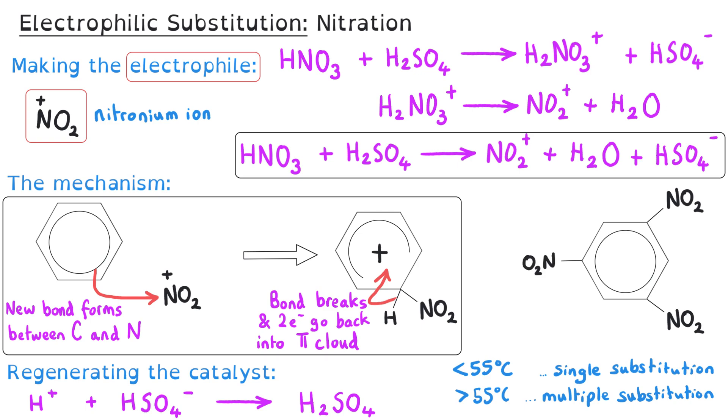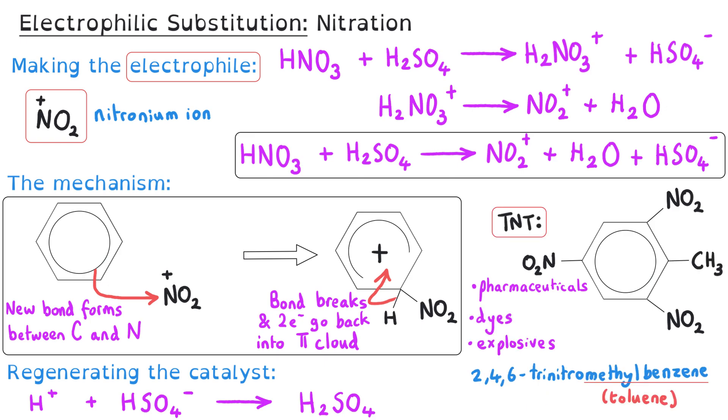This allows us to produce all sorts of different nitro compounds that have got huge range of uses in things such as pharmaceuticals and dyes and explosives. By far the most famous nitrobenzene compound is TNT, which has got three nitro groups because we've had substitution occurring three times with this methyl benzene.